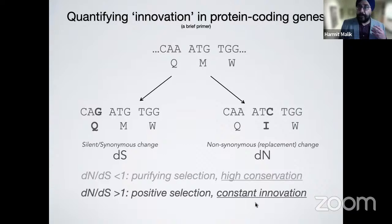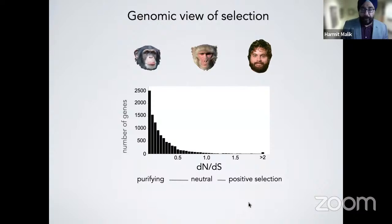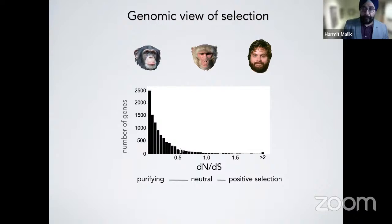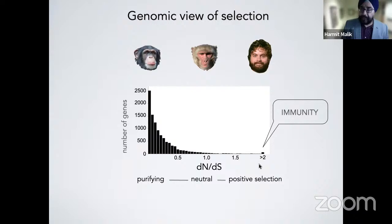We can apply this approach to all protein-coding genes in the genome. Comparing humans with our closest evolutionary relatives, the vast majority of genes lie on the left-hand side of the histogram because they evolve slowly at the amino acid level. But even with this crude whole-gene average dN/dS metric, some genes are evolving very, very rapidly — breaking the speed limit imposed by mutation. Not surprisingly, immunity genes are heavily overrepresented in this category because they keep pace with a completely changing pantheon of pathogens.